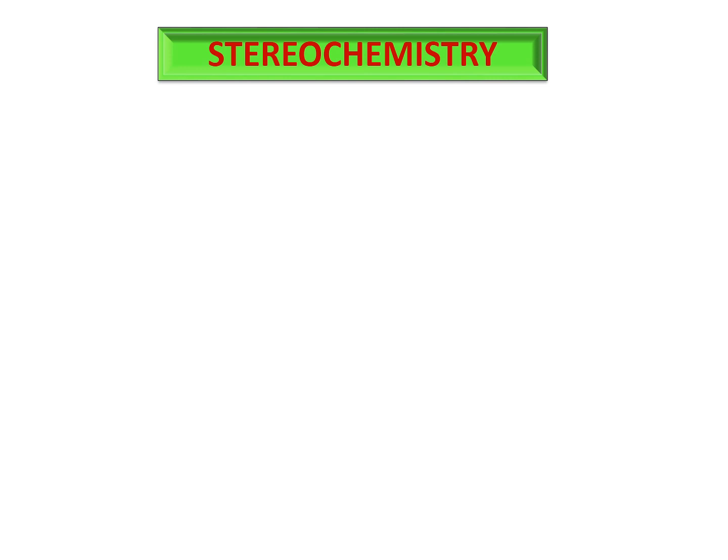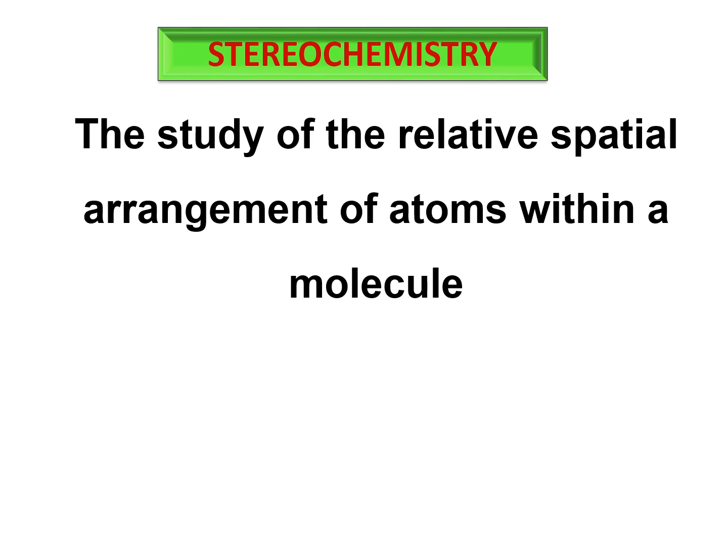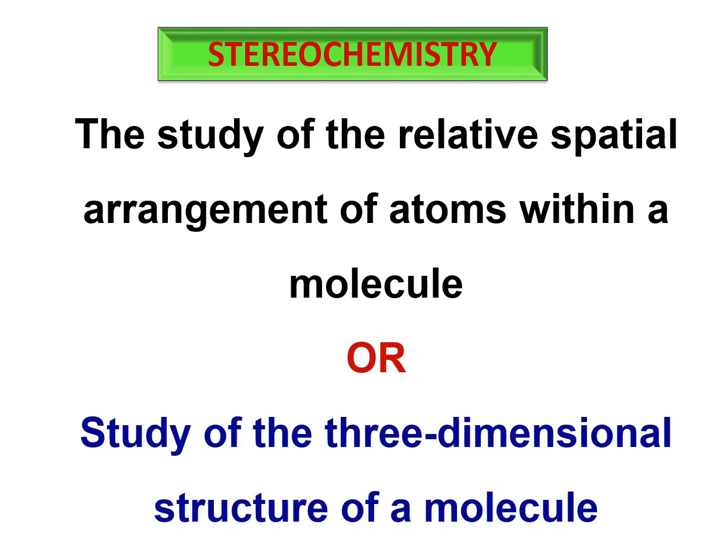Let's define stereochemistry. Organic molecules are three-dimensional in nature — the atoms present in a molecule are arranged in 3D space. The study of the relative spatial arrangement of atoms in a molecule is known as stereochemistry, or simply the study of the three-dimensional structure of a molecule. This involves two things: the skeleton and its dynamics, since molecules are always moving and those dynamics can also be studied with stereochemistry.